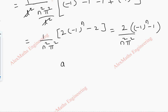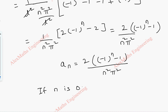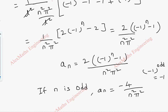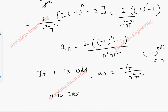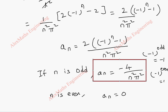So aₙ equals 2[(−1)ⁿ − 1] by n²π². If n is odd, (−1)ⁿ equals −1, so (−1)ⁿ − 1 = −2, giving aₙ = −4 by n²π². If n is even, (−1)ⁿ = 1, so aₙ = 0. We will be using aₙ = −4 by n²π² when n is odd.